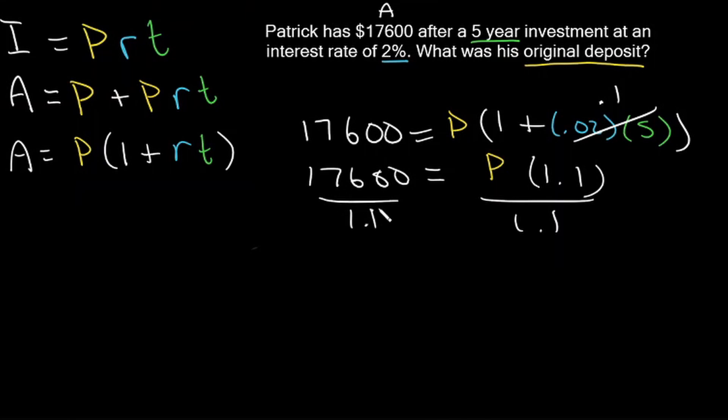And now we can divide both sides by 1.1. So what is 17,600 divided by 1.1? That's going to be equal to 16,000. So our principal is equal to $16,000. So Patrick invested $16,000, and after five years, he had $17,600.